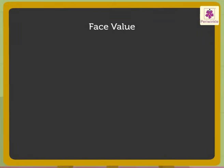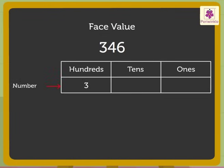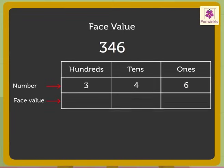Let us look at the number 346 again to understand this. As you know already, number 3 is placed in the hundreds column, number 4 in the tens column and number 6 in the ones column. But, the face value of a digit is the same as the digit itself, irrespective of where it comes in the place value chart.